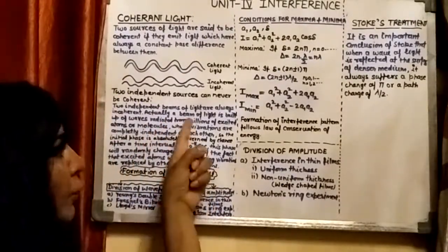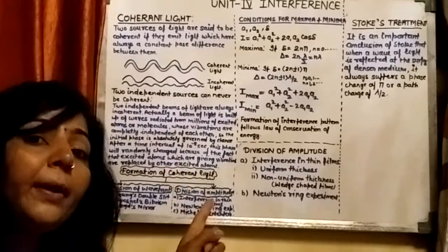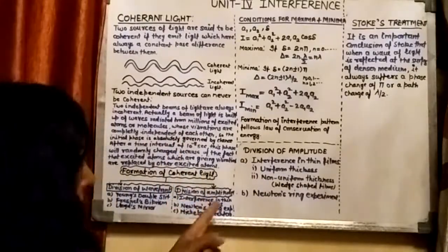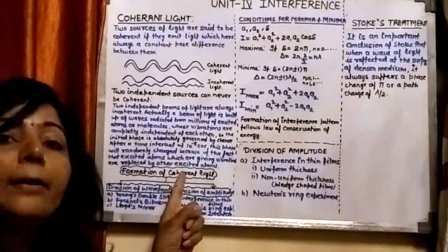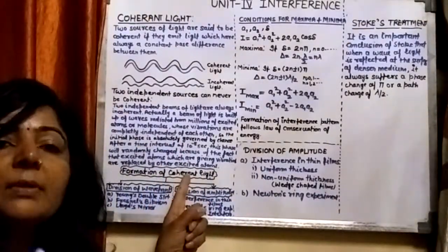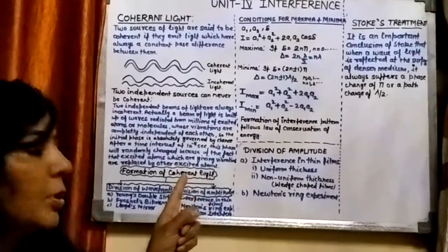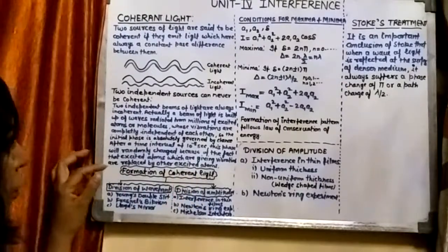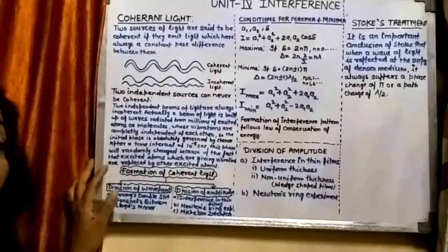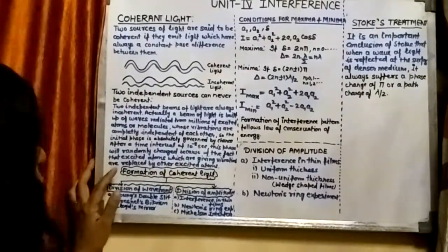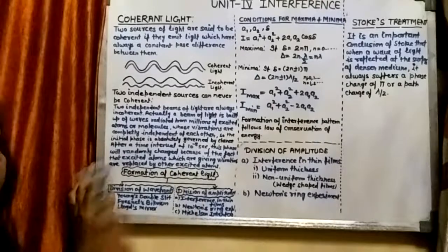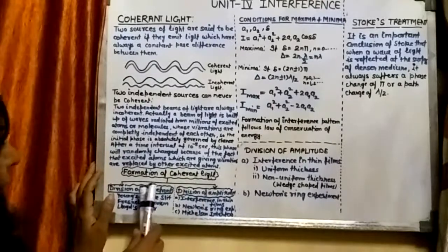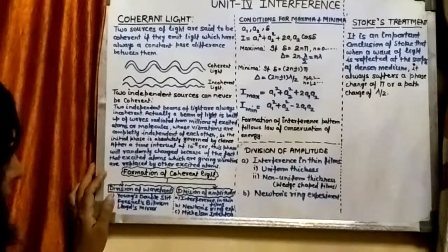So if you want to get coherent light, you have to obtain it from a single source. There are two methods by which we can get coherent light from a single source: the first one is division of wavefront, and the second is division of amplitude.